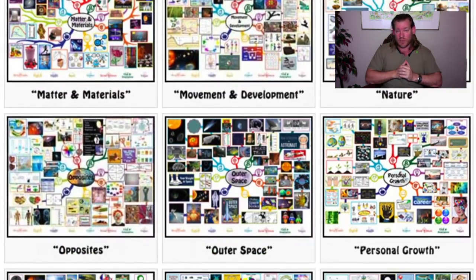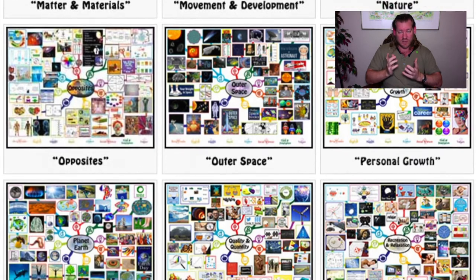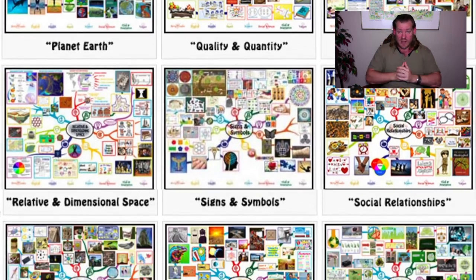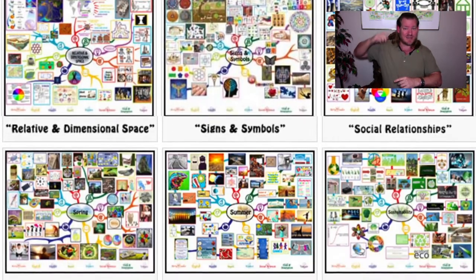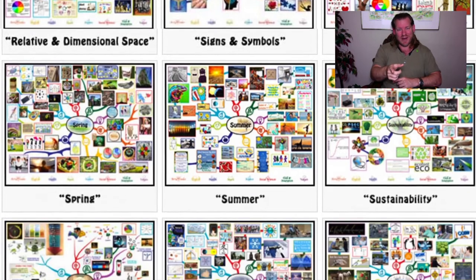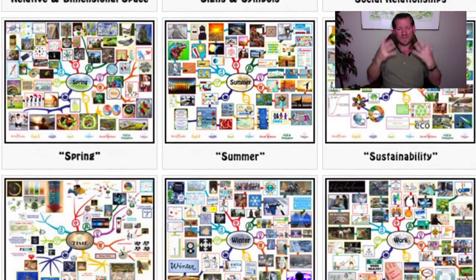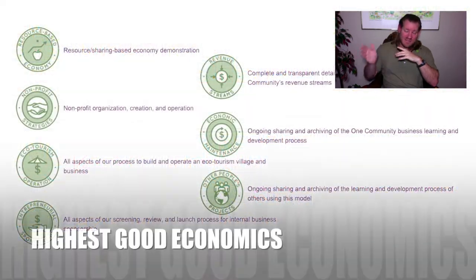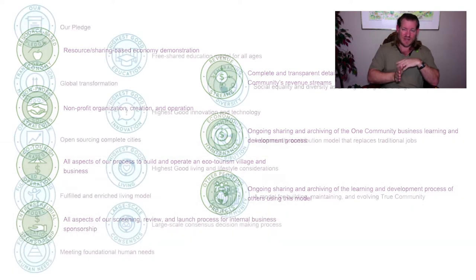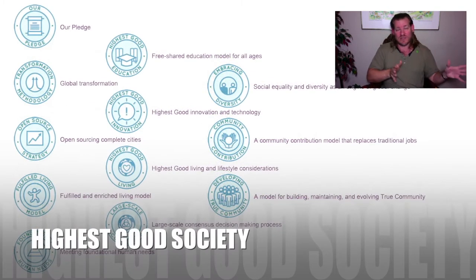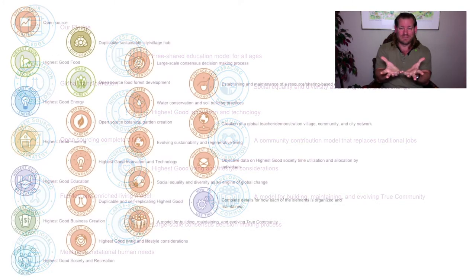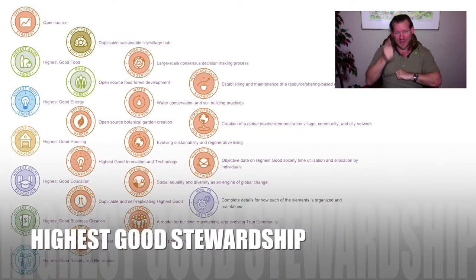Stick around for a couple more minutes if you'd like to see bullet points of all the major components for the project. Visit our website if you'd like to see details and specifics, or visit our helping page if you'd like to get involved. And until next week, we'll keep on open sourcing and free sharing how to build a global cooperative — one component at a time, seven major components simultaneously: food, energy, housing, fulfilled living, education, economics, and true stewardship — putting all those together, open source and free shared for the world. Thanks for following our progress. Until next week, we'll keep on keeping on.